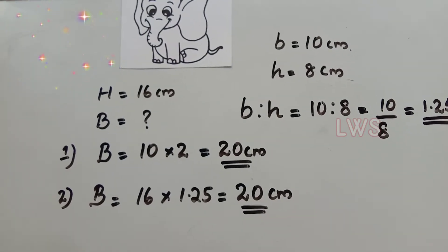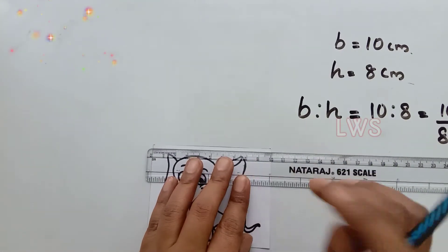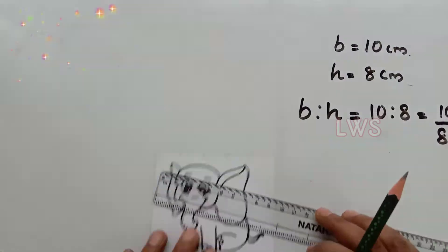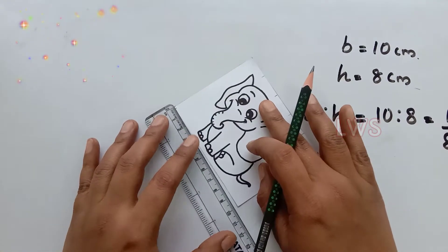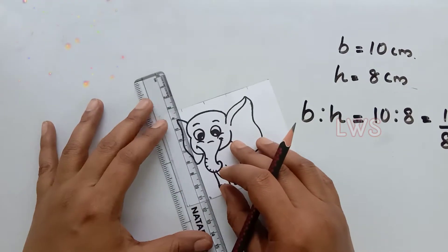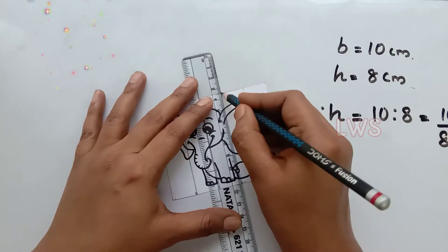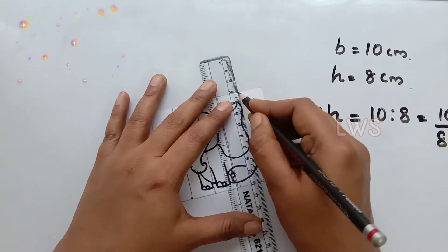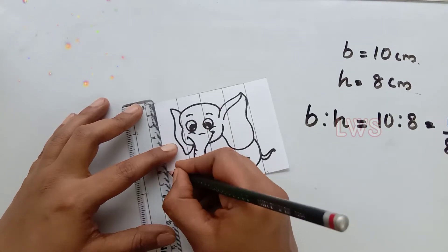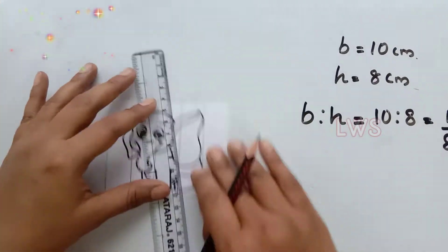Now we have enough math. We can go to the art section. We can learn a very important technique in drawing called the grid method. Any pictures, even portraits, are drawn using this method, and the peculiarity is that we can change the picture to any size. For this, first we draw grids on the original picture. Here I am dividing it into sections of 2 cm each, so the base is divided into 5 sections and the height into 4.